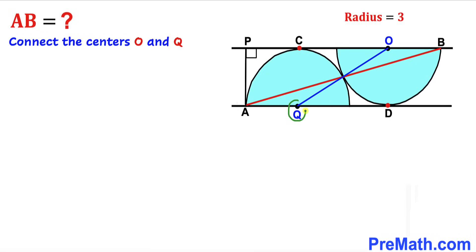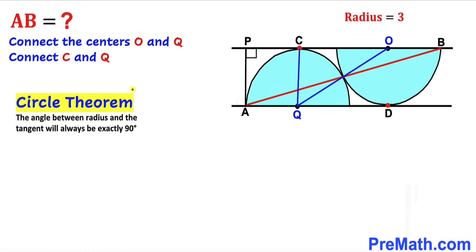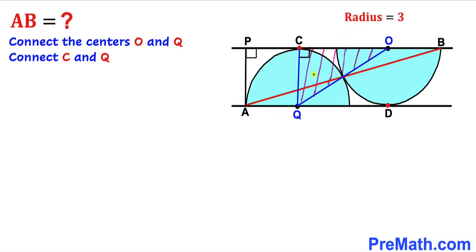I have connected these centers Q and O, and likewise connected point C and center Q as well. Now let's recall the circle theorem: the angle between the radius and the tangent will always be exactly 90 degrees. In our case, this is our tangent line, and CQ is the radius, so therefore this angle has got to be 90 degrees. As a result we get this right triangle QCO.